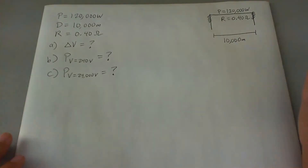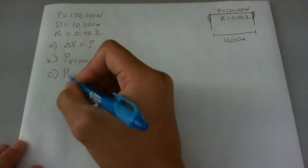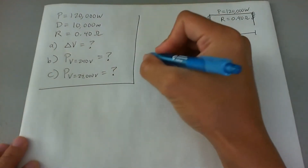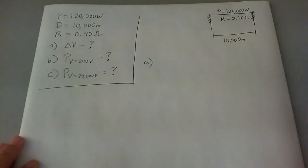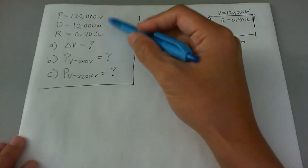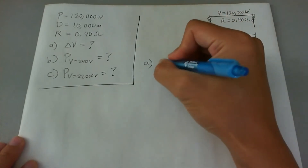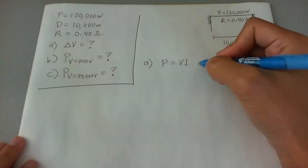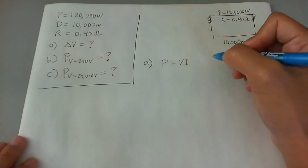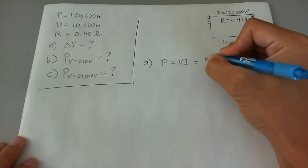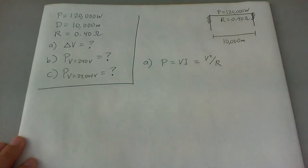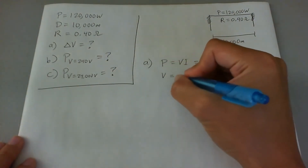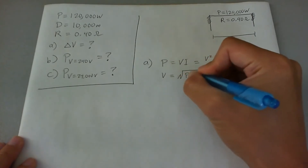First thing you want to do is just try to take the simplest route you possibly can. For part A, they want voltage, they give us R and they give us P. You could say P equals VI, but that's not going to help because we don't have current and I don't want to do too many steps. So you can also say P is equal to V squared over R. Solving for V, we get V equals the square root of P times R.